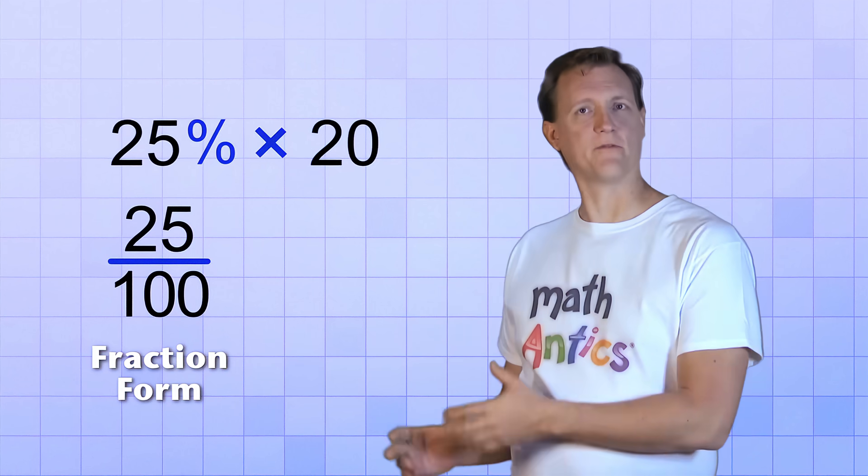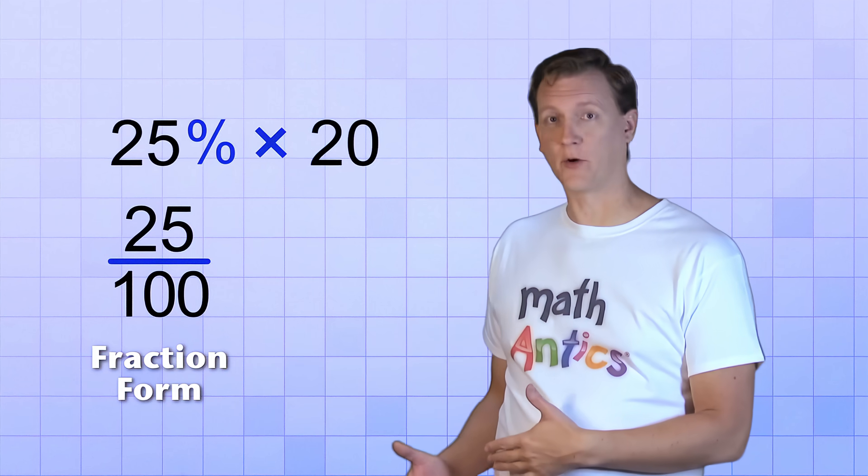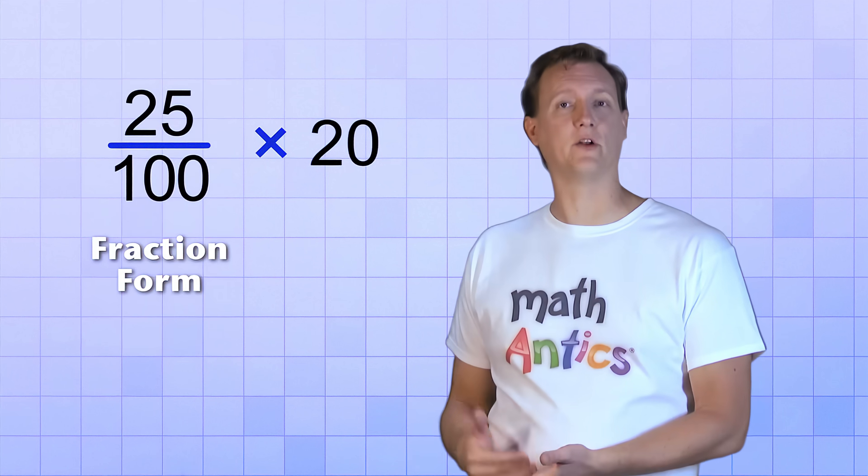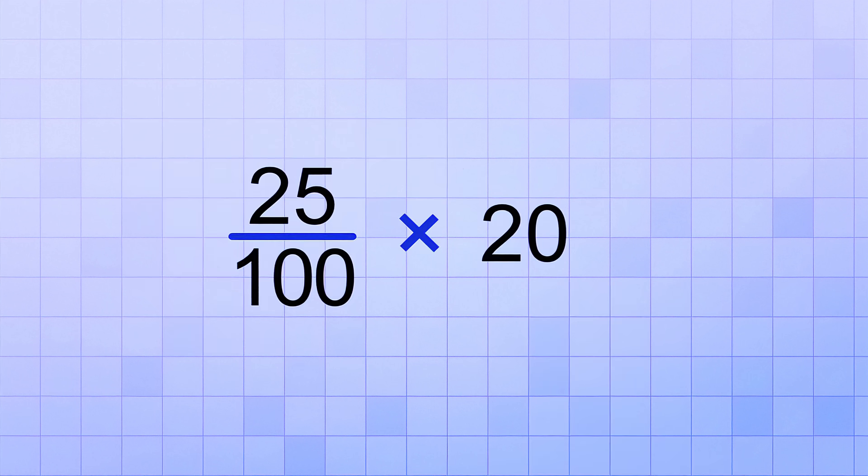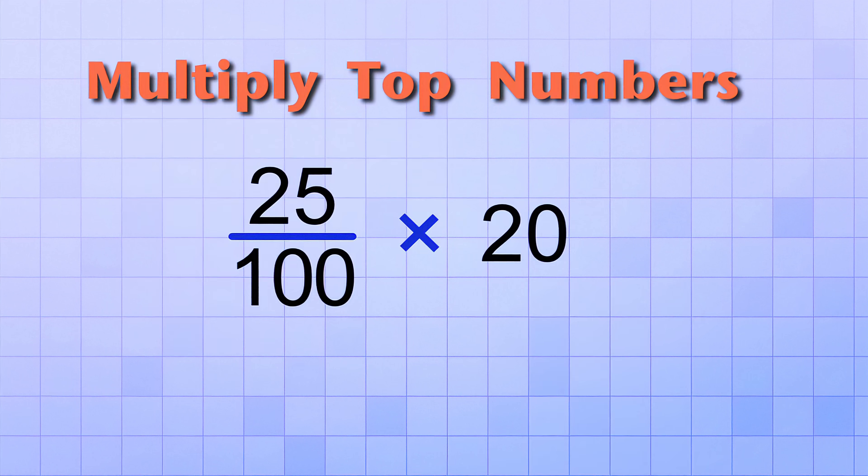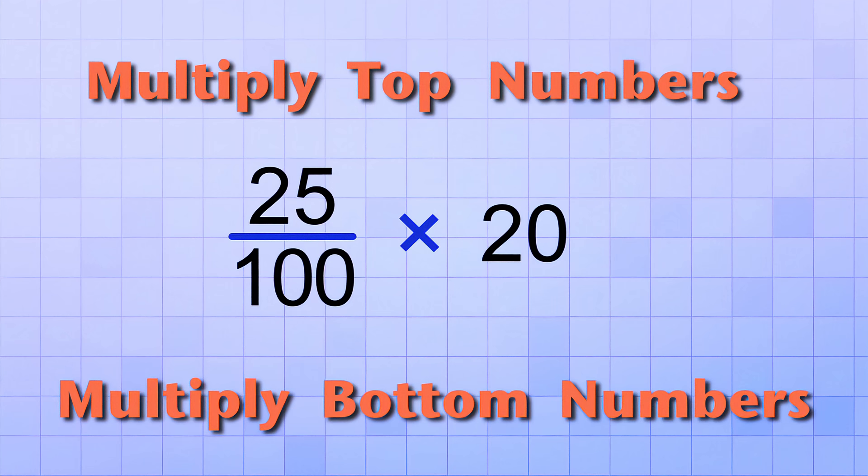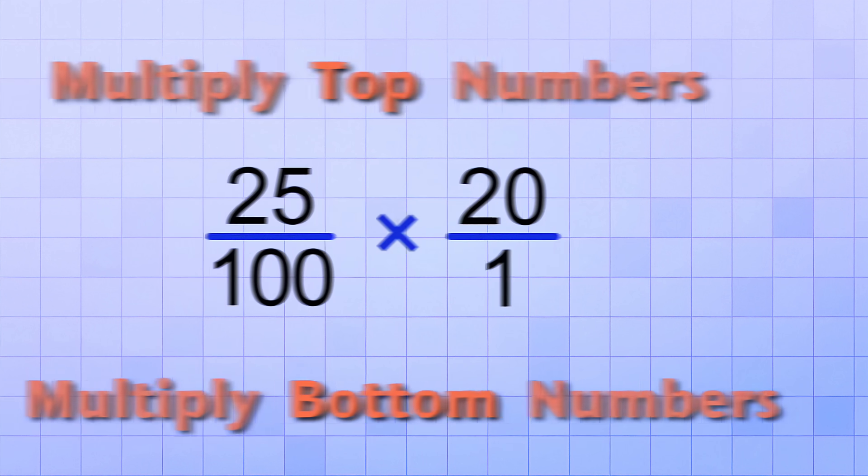Okay then, if we use the fraction form of our percent, then our problem becomes 25 over 100 times 20. Now that's a problem we know how to do! To multiply fractions, we just multiply the top numbers, and then we multiply the bottom numbers to get the answer. And we can just write 20 as a fraction by putting 1 as the bottom number, because 20 over 1 is the exact same value as 20. So let's go ahead and multiply.